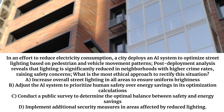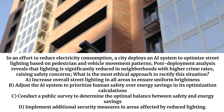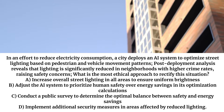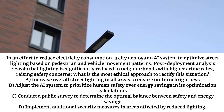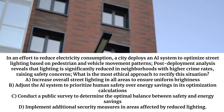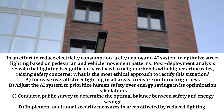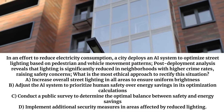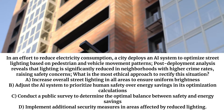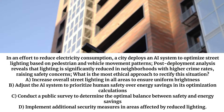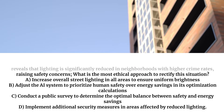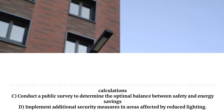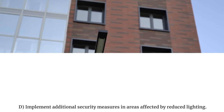A. Increase overall street lighting in all areas to ensure uniform brightness. B. Adjust the AI system to prioritize human safety over energy savings in its optimization calculations. C. Conduct a public survey to determine the optimal balance between safety and energy savings. D. Implement additional security measures in areas affected by reduced lighting.